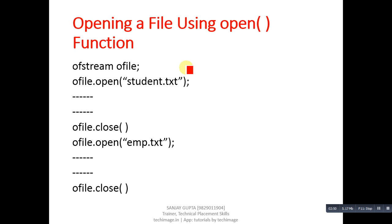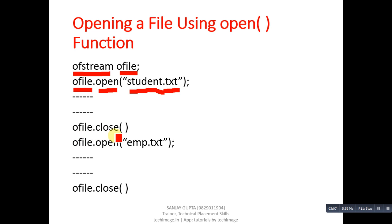The second way is using the open function. ofstream is the class, ofile is the object, then ofile.open is called with the file name to store output, followed by ofile.close. Then ofile.open is called again to open emp.txt. Through a single object ofile we linked two files: first student.txt, then emp.txt. This is the benefit of the open function over the constructor.